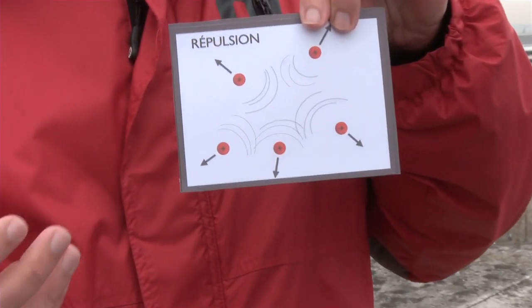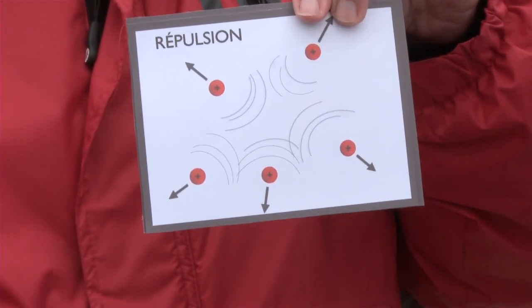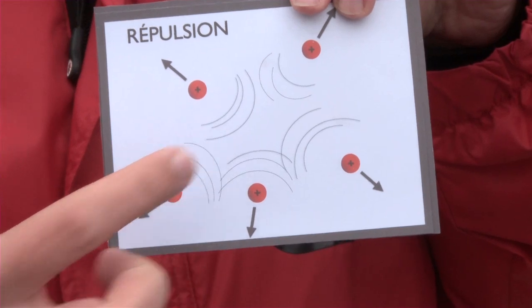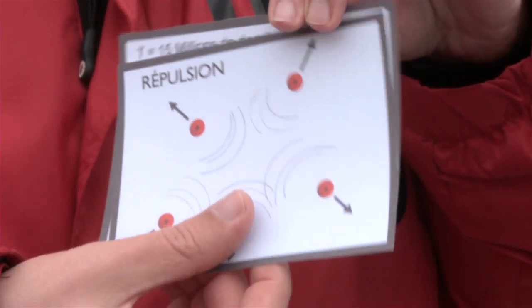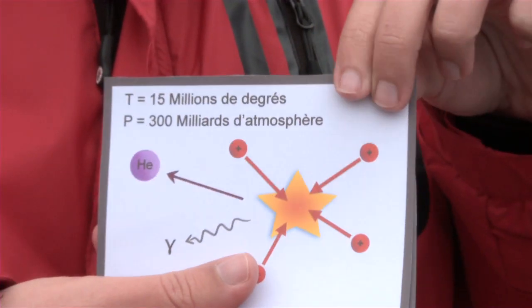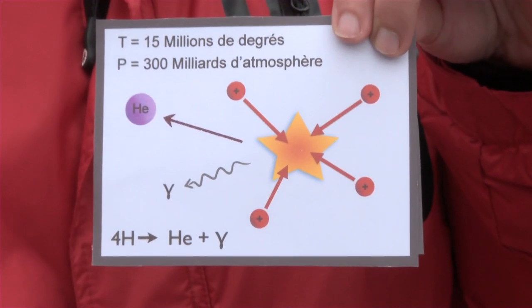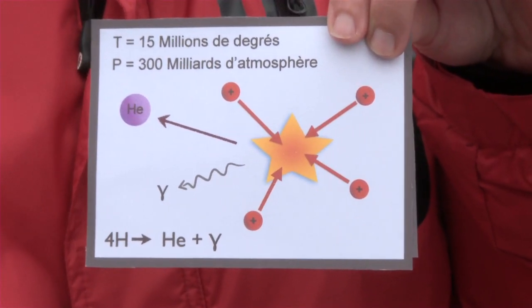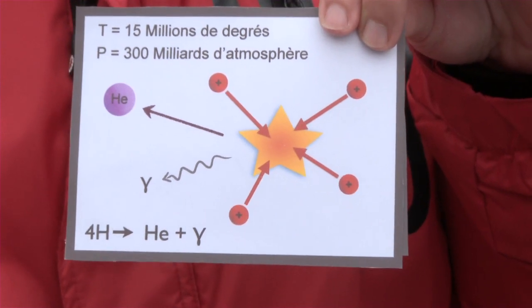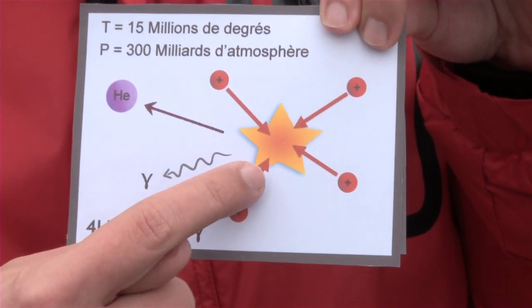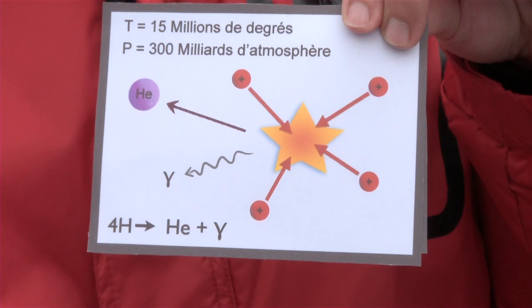In normal conditions, the atoms' nuclei repel each other, never colliding between themselves. At the center of a star, temperature can reach millions of degrees, and the pressure is huge. In these extreme conditions, atomic nuclei can collide, triggering nuclear reactions.